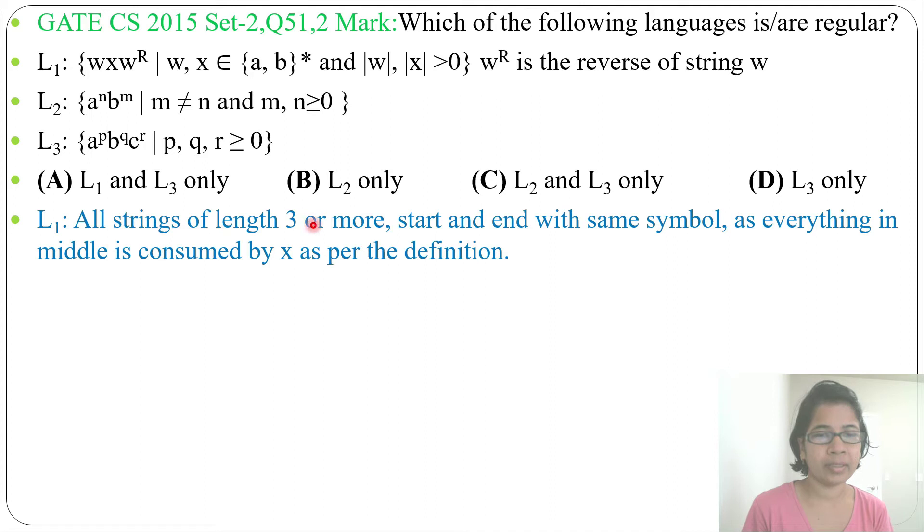L1: all strings of length 3 or more—why length 3? Because W length and X length are greater than 0, meaning minimum 1. W length will be 1, X length will be 1, W reverse length will be 1. So all strings of length 3 or more start and end with same symbol, as everything in middle is consumed by X. You can see this as start and end with same symbol, and we already designed DFA for start and end with same symbol. So this is regular. L1 is regular.